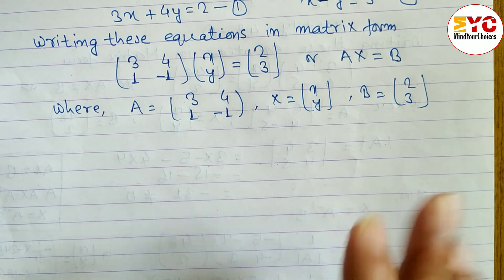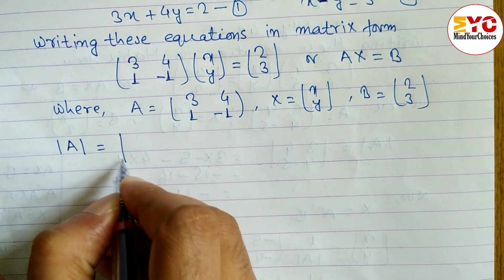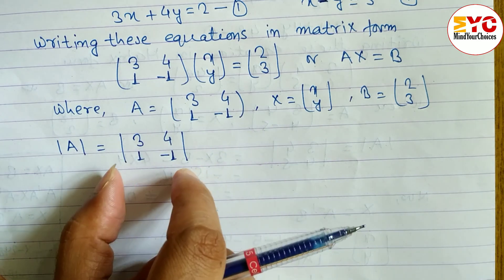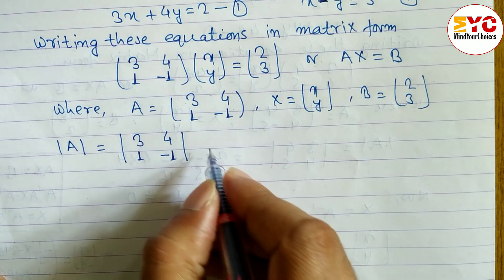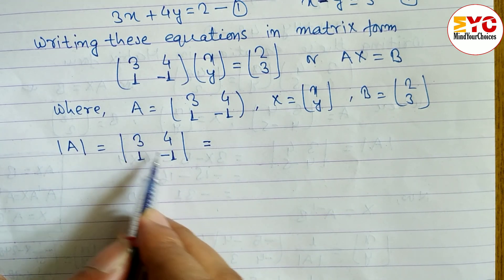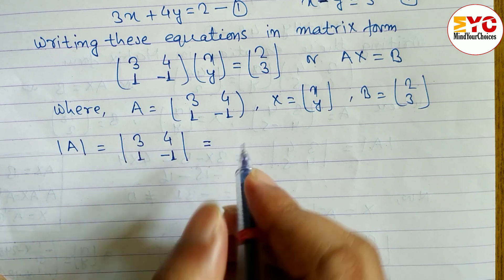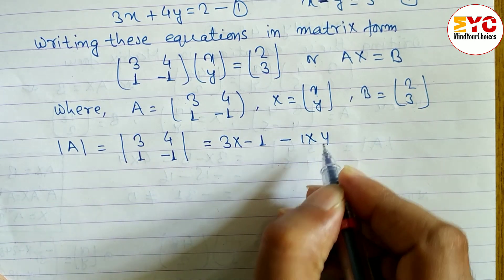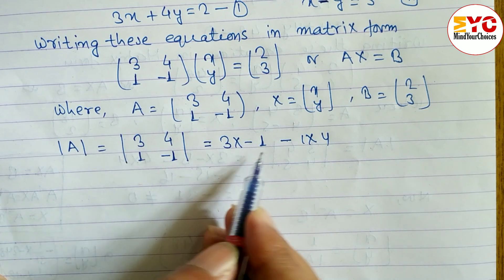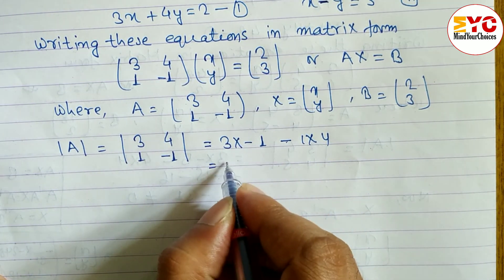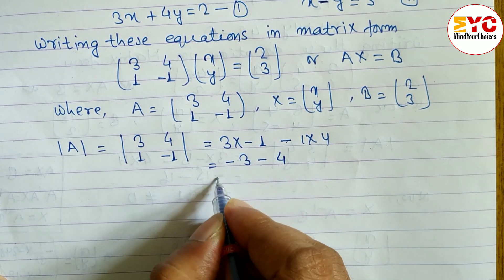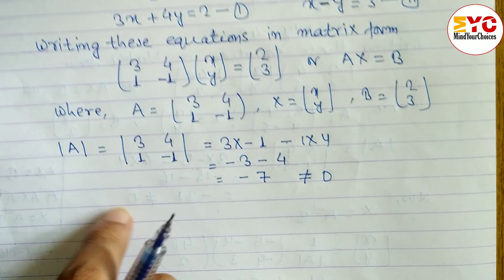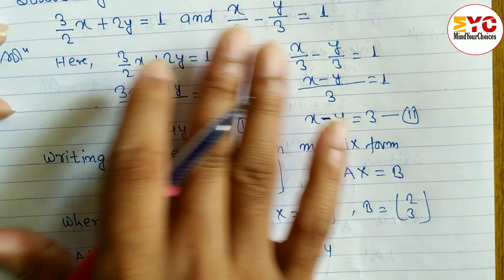To find the determinant, we write each element inside vertical lines without changing their places. The determinant is the main diagonal product minus the non-diagonal product: (3 × −1) − (1 × 4) = −3 − 4 = −7. Since det(A) = −7, which is not equal to 0, the matrix is non-singular and we can find A inverse. If we got 0 here, we could not find A inverse or obtain a unique solution.